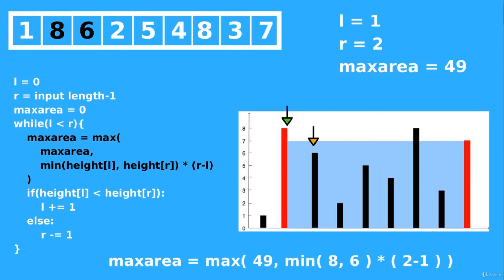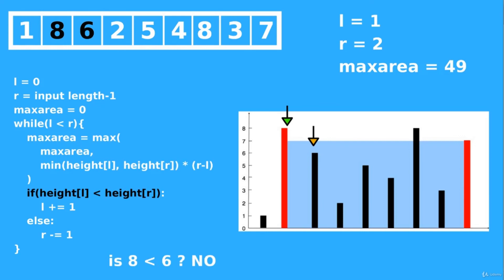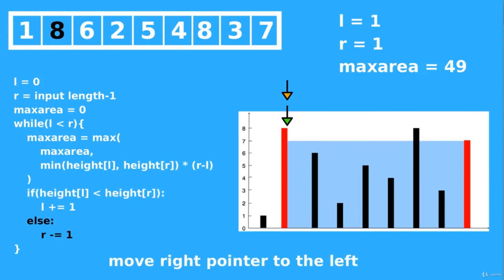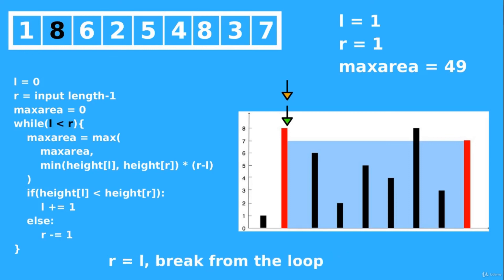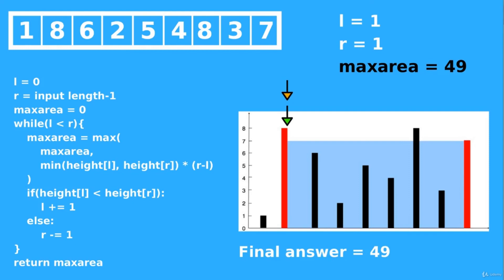Closing in on the left pointer — same logic, we try to update our area but 49 remains our best. We move the right pointer until it points to the same building as the left pointer. At that point the loop condition is no longer fulfilled — r equals l — so we break out of the loop. Our final answer, the maximum area, is 49.